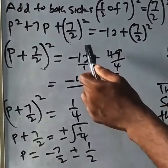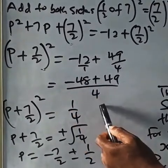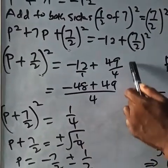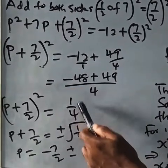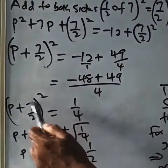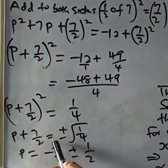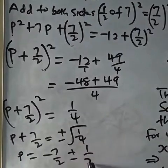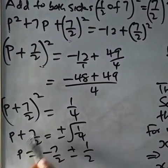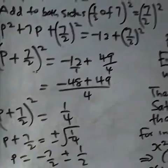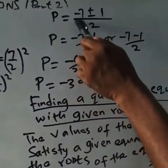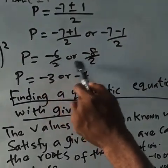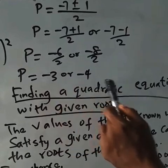So (p + 7/2)² equals minus 12 plus 49 over 4. Express minus 12 as a fraction: minus 12 over 1. The LCM is 4; 4 times minus 12 is minus 48, plus 49, gives 1 over 4. Taking the square root of both sides: p plus 7 over 2 equals plus or minus one half. Transferring 7 over 2: p equals minus 7 plus 1 over 2 or minus 7 minus 1 over 2, giving minus 6 over 2 or minus 8 over 2. Therefore p equals minus 3 or minus 4.